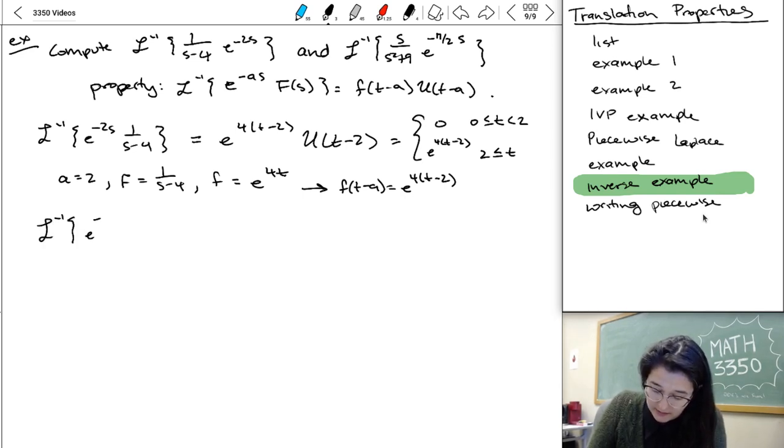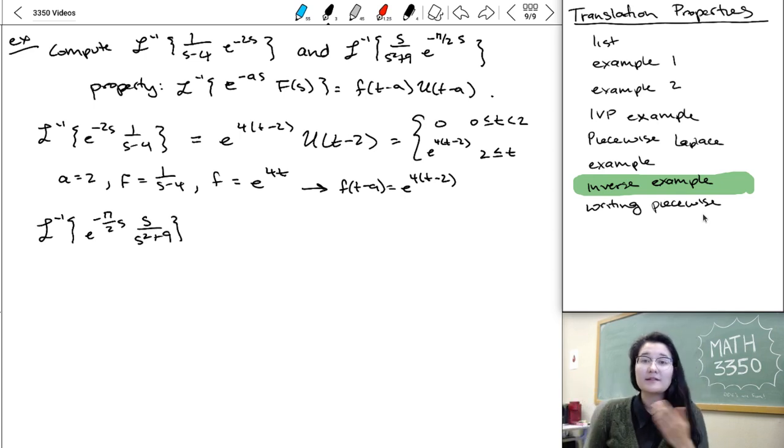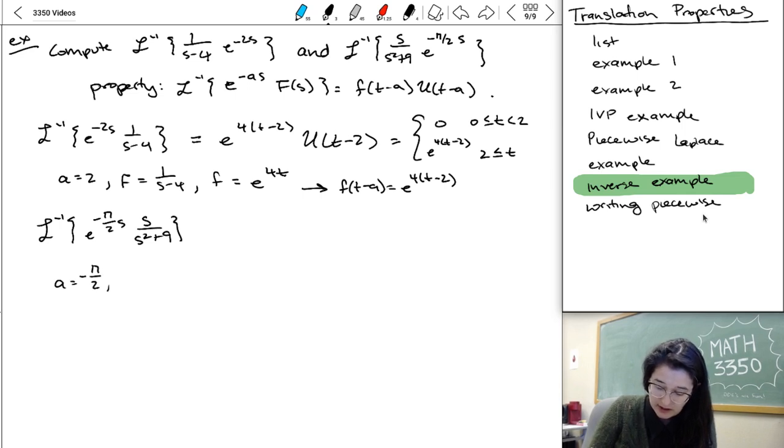L inverse of e to minus pi over two S times S over S squared plus nine. So in this case, inside the E, I see minus pi over two S. So that means my A is minus pi over two. And then multiplied by that, I see F is equal to S over S squared plus nine. That means that my little F is one of those, cosine? Yeah, cosine has S on top. So it's cosine and then it's three T from the...